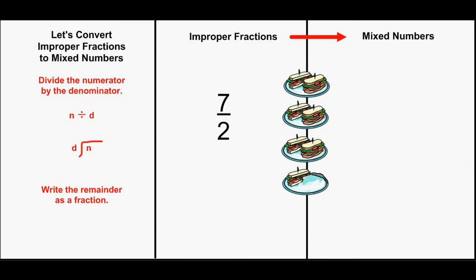Let's begin converting improper fractions to mixed numbers. First, we'll divide the numerator by the denominator. Then, write the remainder as a fraction.